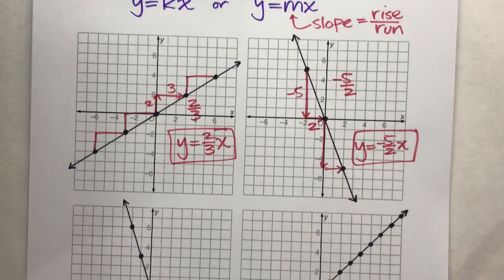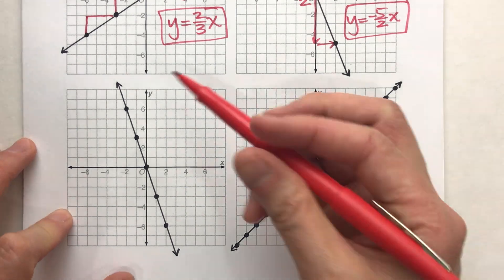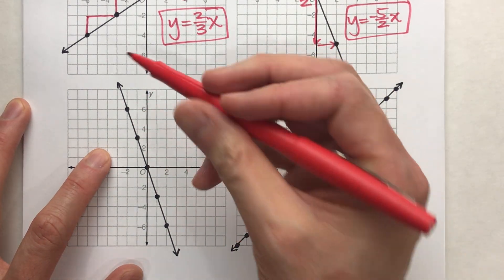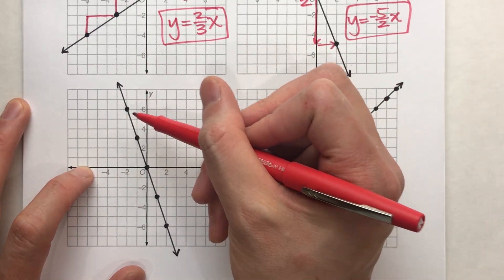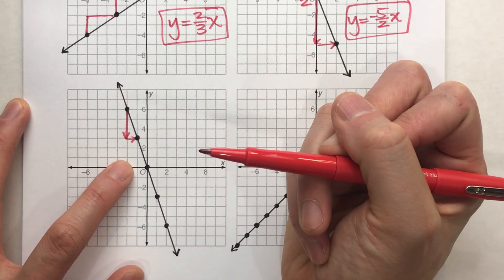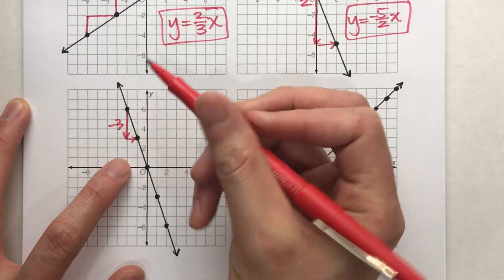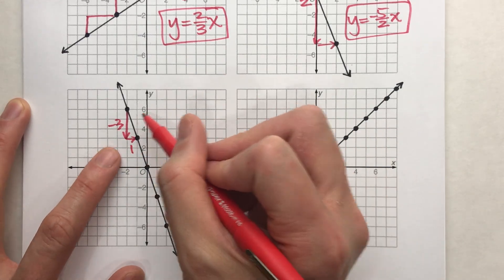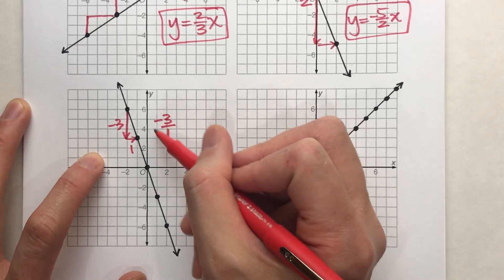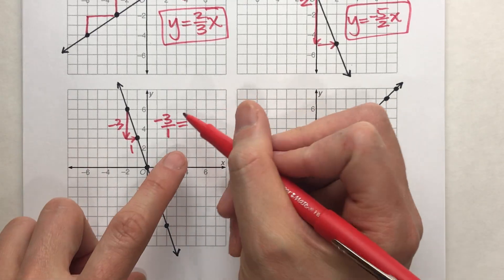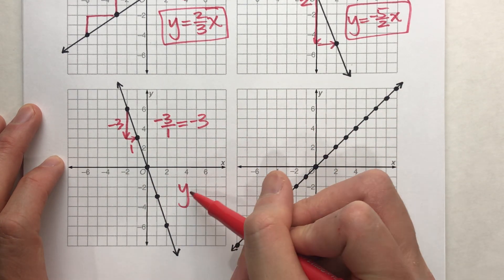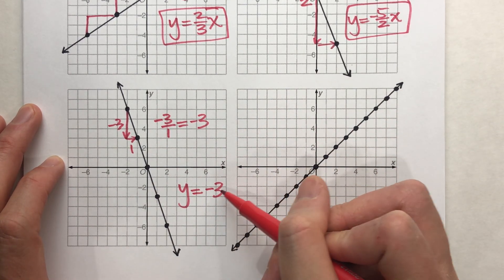Let's do two more. Notice this one is also going down and to the right. I'm going to pick two points — notice it goes down three and right one. So my slope is negative three over one. We can actually reduce this: anything over one is just itself, so negative three over one is just negative three. My equation is y equals negative three x.